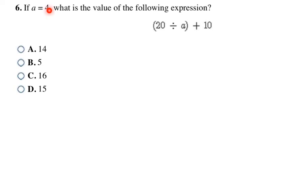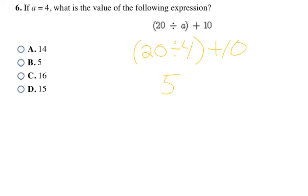This problem tells us A = 4. Rewriting the expression, I replace A with 4 to get (20 ÷ 4) + 10. Order of operations: do what's inside the parentheses first — 20 ÷ 4 = 5. Then copy down the +10, and 5 + 10 = 15. The final answer is 15, choice D.